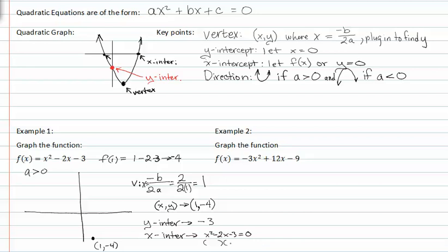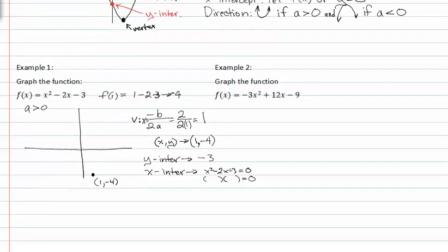Factoring my trinomial, I get (x - 3)(x + 1). So setting my factors equal to zero, I get x is equal to 3 and x is equal to -1.